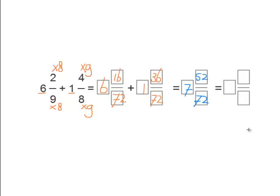But we can reduce 52 and 72. We're not quite finished yet. We can divide the 52 by 4 as well as the 72 by 4 to make the numbers smaller.